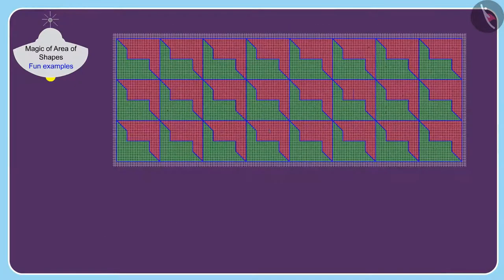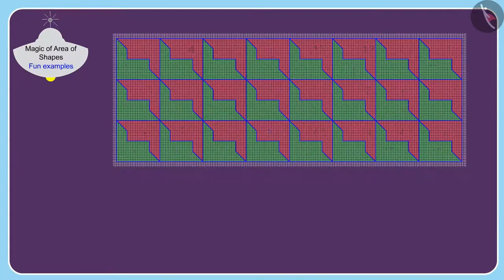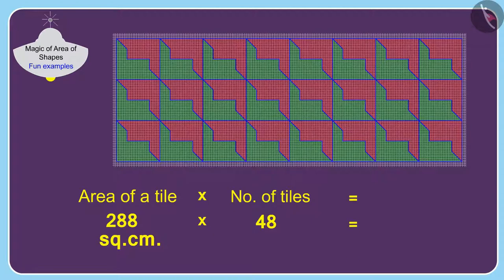Banno has used a total of 48 such tiles to decorate the wall. Therefore, the area of the wall will be 288 multiplied by 48, which equals 13,824 square centimeters.